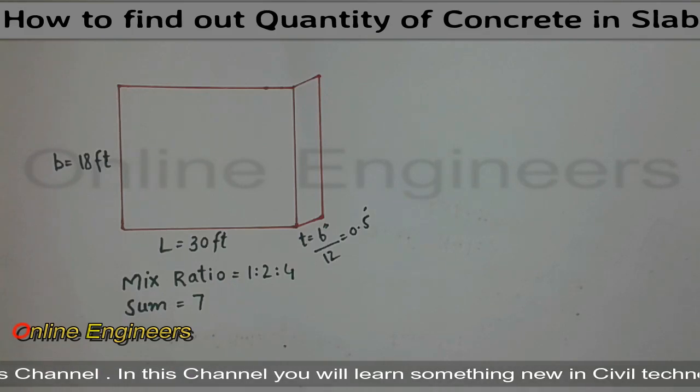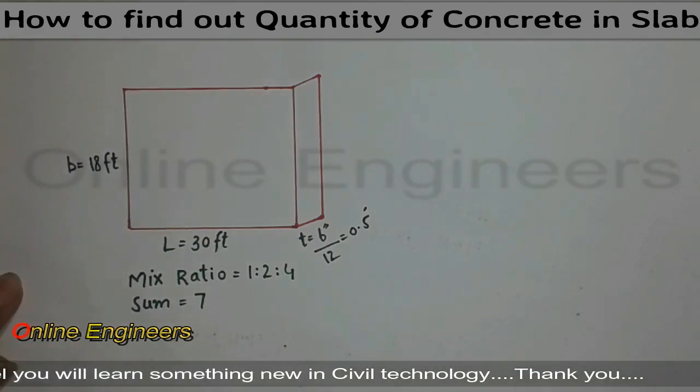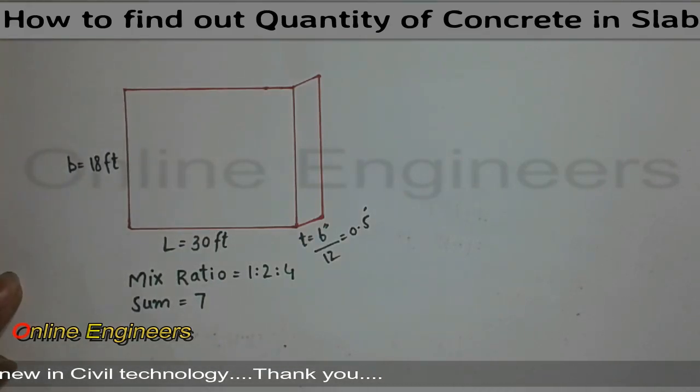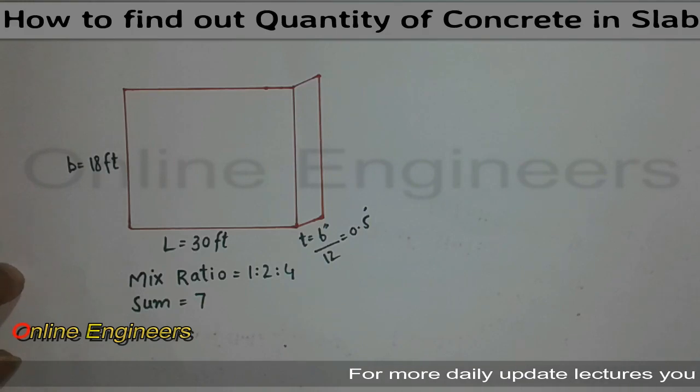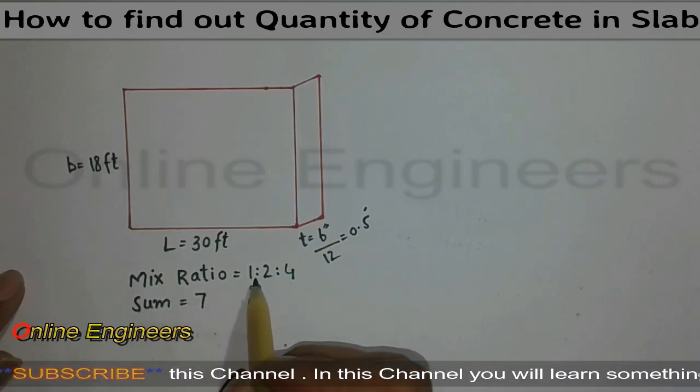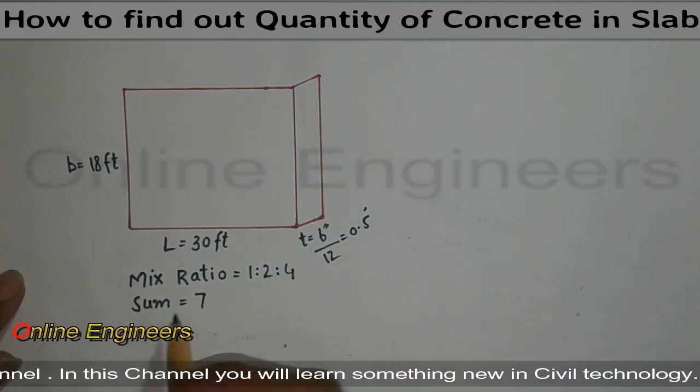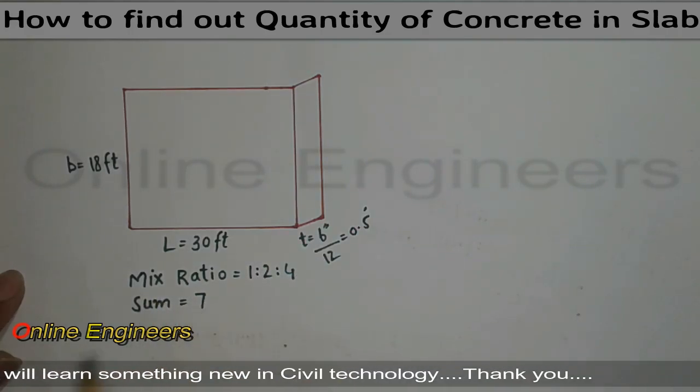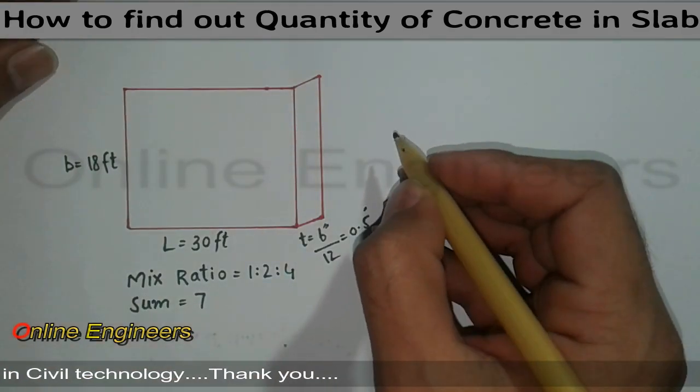I want to convert it in feet, so simply divide by 12. That is equal to 0.5 feet, okay? Now I want to find out quantity of sand, cement, and crush, also you can say coarse aggregate and fine aggregate.